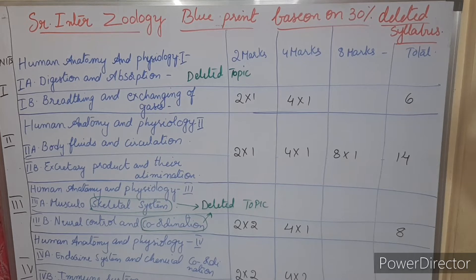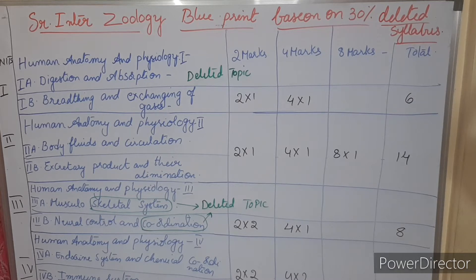In this video we are going to discuss the senior intermediate zoology blueprint — the questions of two marks, four marks, and eight marks, from which chapters they are coming, and what is the deleted 30 percent topic. Everything we are going to see in this video. Coming to senior intermediate zoology, we have eight chapters or eight units.